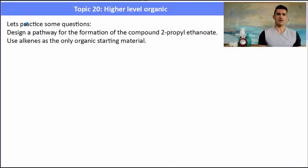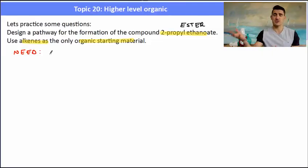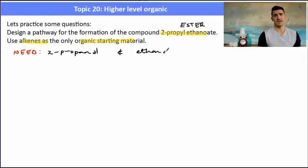So let's design a pathway for the formation of the compound 2-propyl ethanoate using alkenes as the only starting material. An ester 2-propyl ethanoate is made from an alcohol and an acid. So before we can actually make that product we've got to work out what our two things are that we need to react to actually form that product. So the first part of the name comes from the alcohol so we need 2-propanol. The last part of the name comes from the acid so we need ethanoic acid. So they're the two things that we need to make from our alkenes and then make our ester.